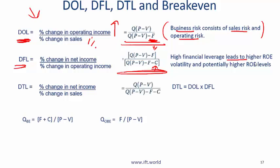High financial leverage leads to high ROE because with high leverage the value of equity goes down. ROE is net income over equity — if equity is lower, ROE will be higher as long as you are making money. If you are not making money, then ROE will be lower. This means that the riskiness or ROE volatility increases, and if on average you are making money, then potentially the ROE levels will be higher.